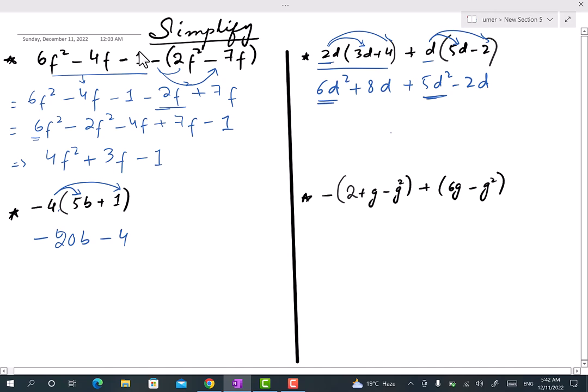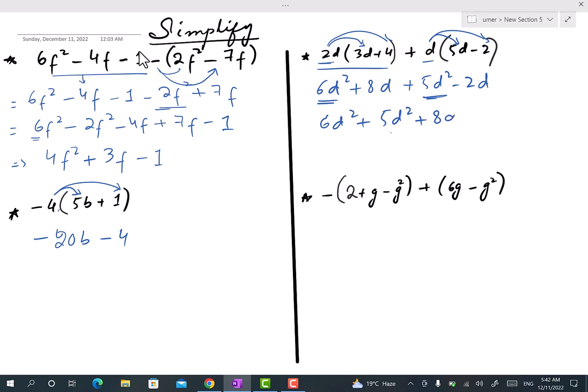Now arranging: 6d² plus 5d² plus 8d minus 2d. Now 6 plus 5 is 11d², and plus 8 minus 2 is 6d. So this is the answer of the third question.